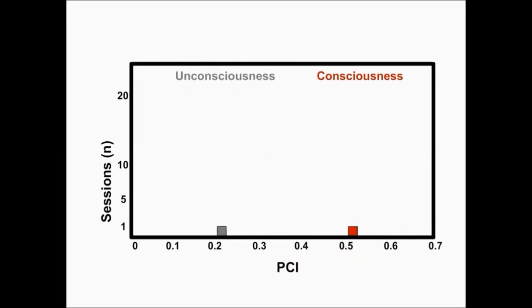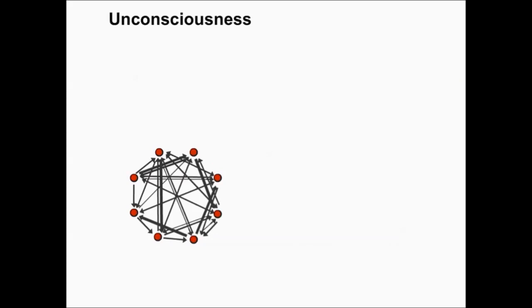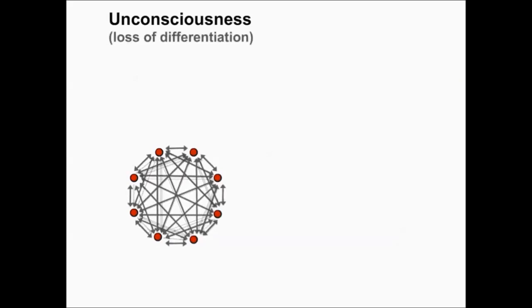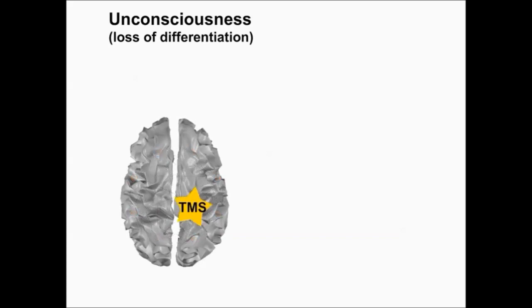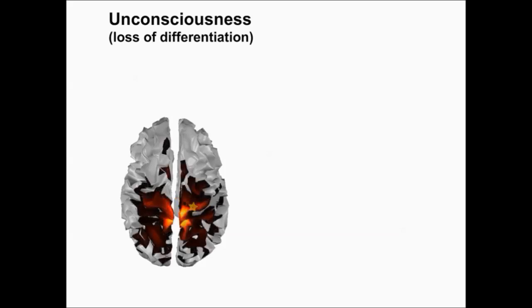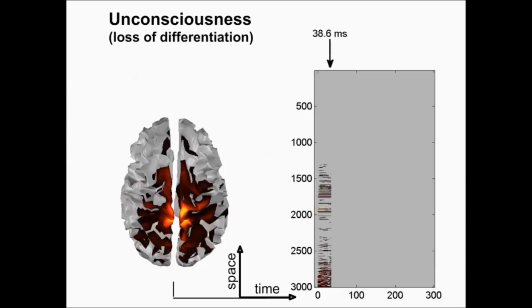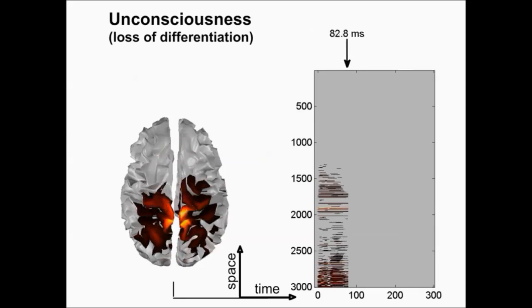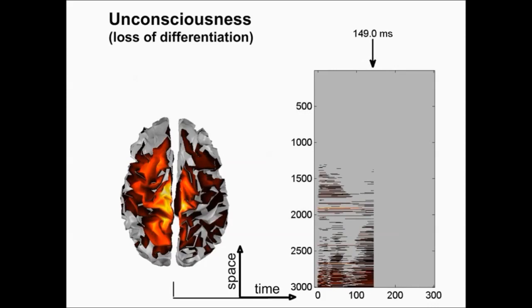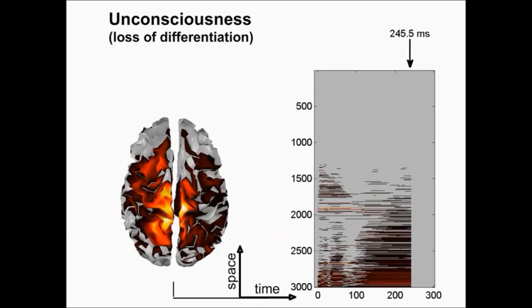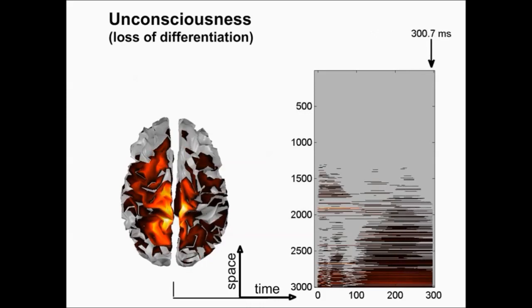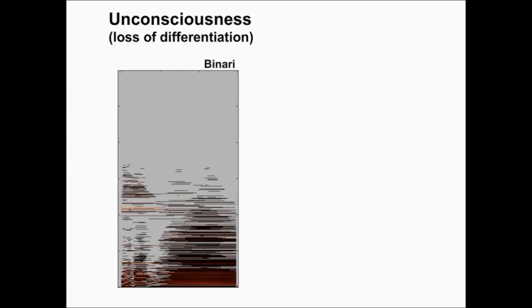In the second case, when there is a loss of differentiation, the system is integrated but it is homogeneous. That is, the response is widespread but stereotypical, and it contains redundant information. In this case, the response will produce a pattern that is easy to compress and gives, again, a complexity index of low value — in this case, 0.21.